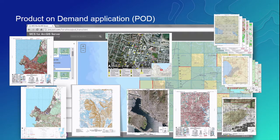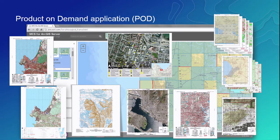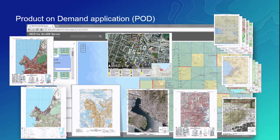The last one is a simple points of interest map. This is really just a concept map to show that we can throw any data behind the scenes, any MXD behind the scenes, and still run it with a viable output. A majority of these were created as samples to show industry users, and the industry users have taken those and created them into their specific needs. This is what the POD application allows you to do: create maps, take our samples, and turn them into what your industry actually needs.